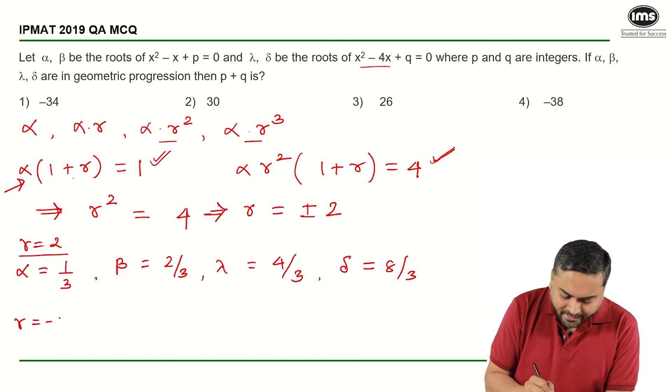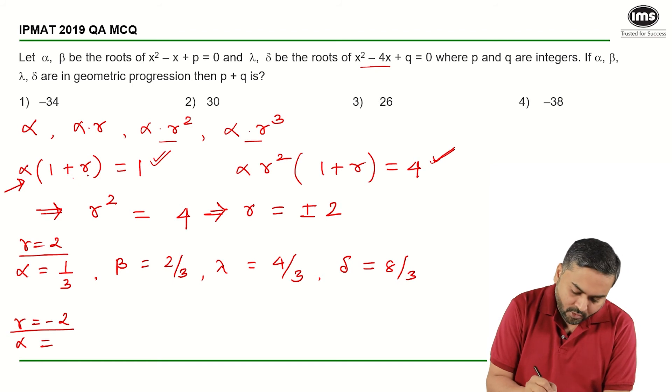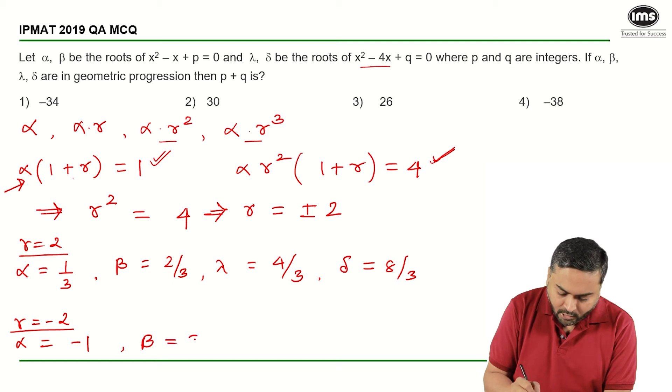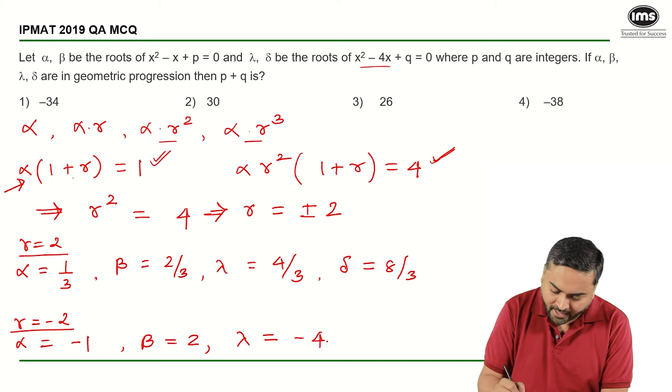But if R is equal to minus 2, then alpha is equal to minus 1, beta is equal to 2, gamma is equal to minus 4 and delta is equal to 8.